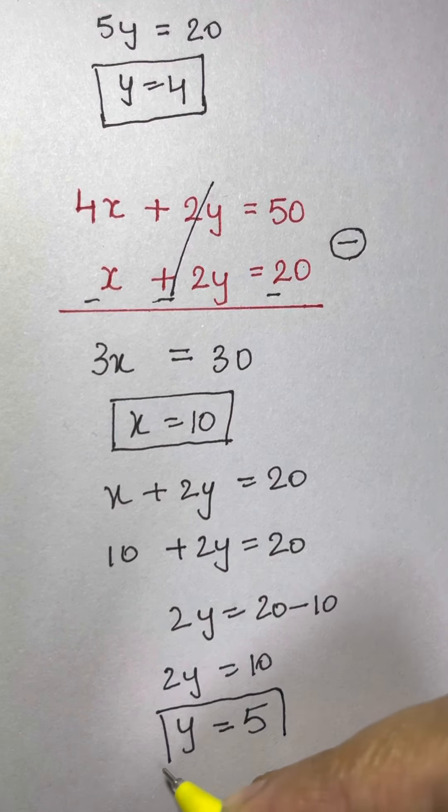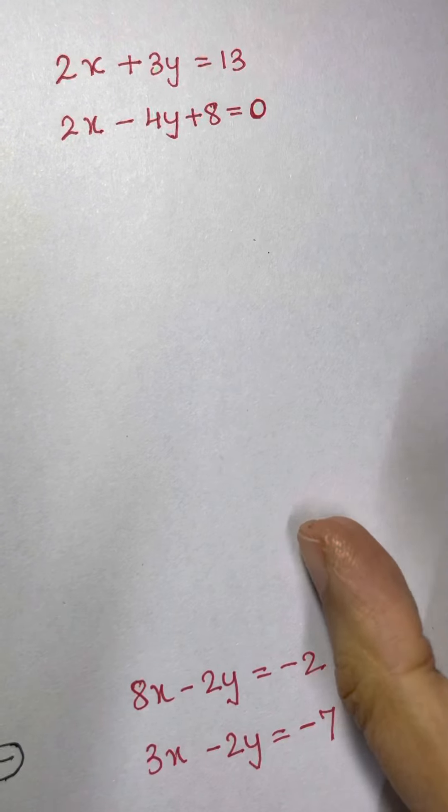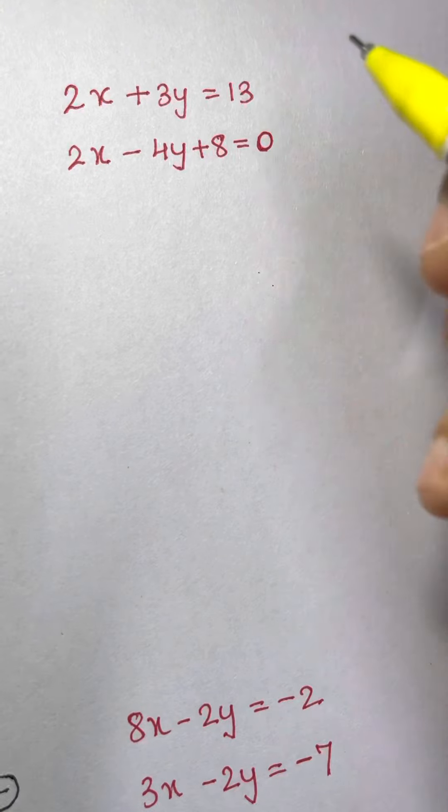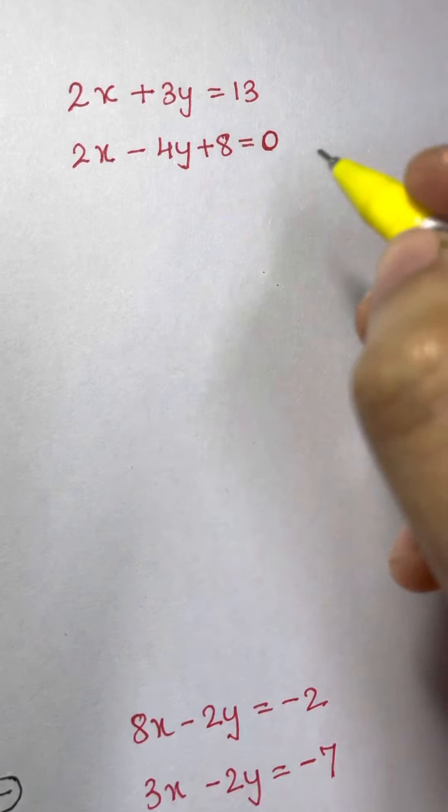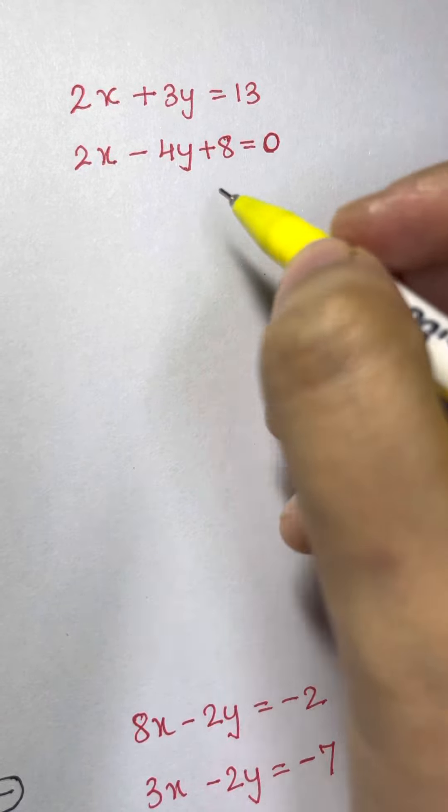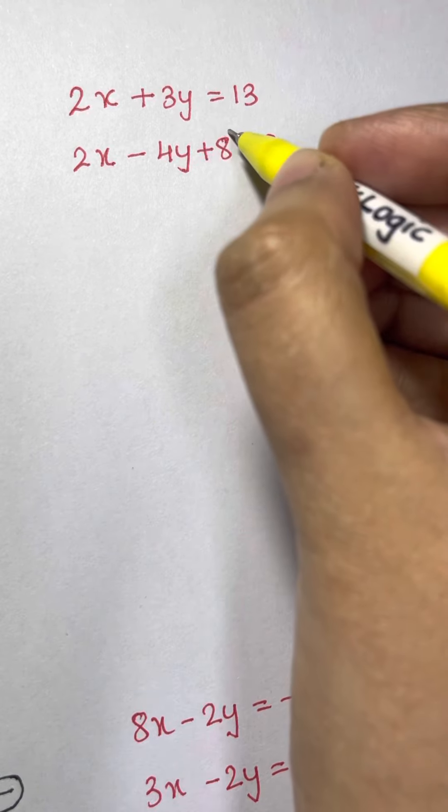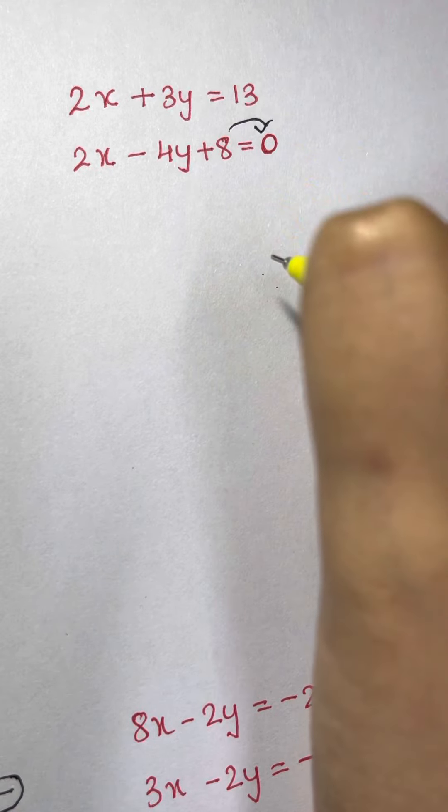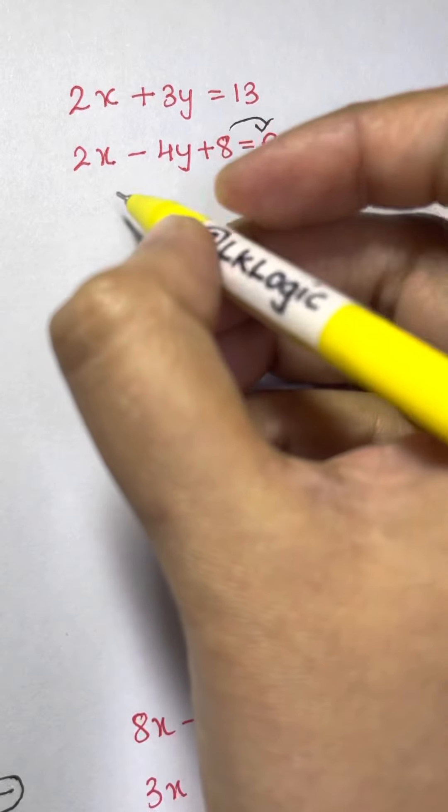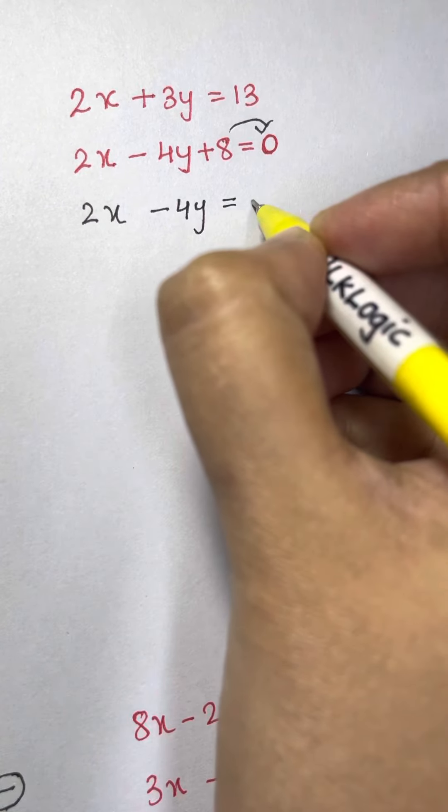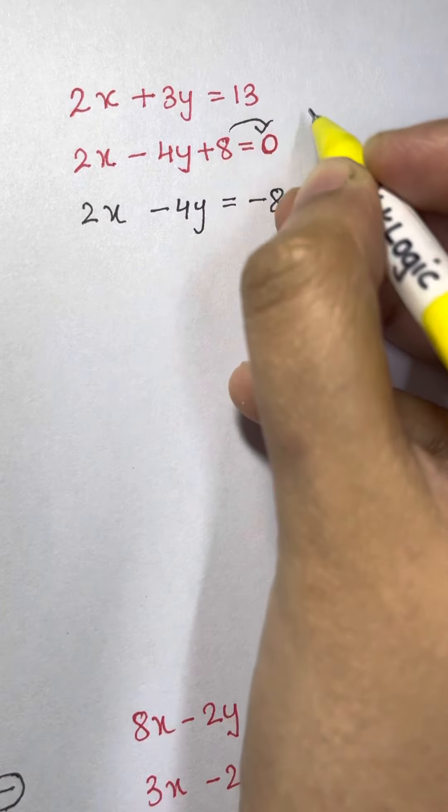Alright, let's see another example. For example, if you have this. 2x plus 3y equals to 13 and this. Now here what are we going to do? You have something different here. Like you don't have 8 equal to this side. So let's bring 8 equal to this side. So it becomes 2x minus 4y equals to negative 8 when it goes the other side.